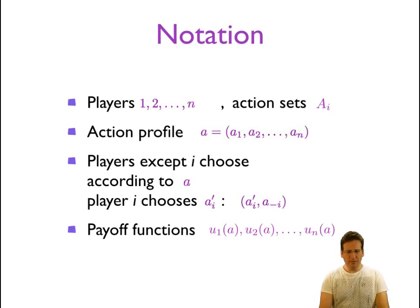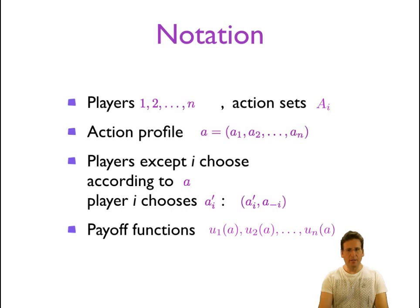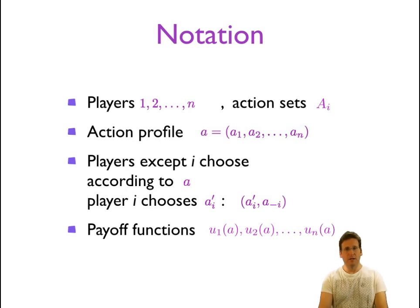Let's start with some notation. We denote the players by the numbers 1 through n, so there are n players altogether, and each one has an action set a sub i — that's player i's action set. For example, in the prisoner's dilemma that would be quiet or defect, so a sub i for each player would have two actions in it.